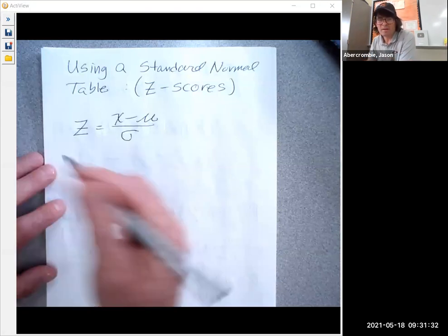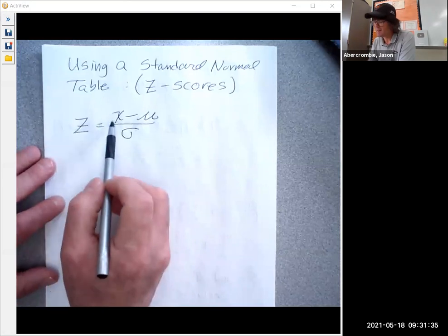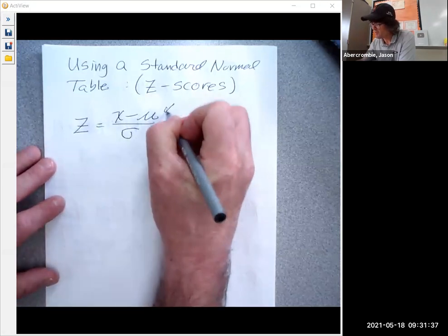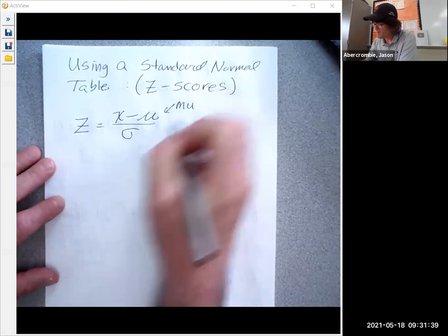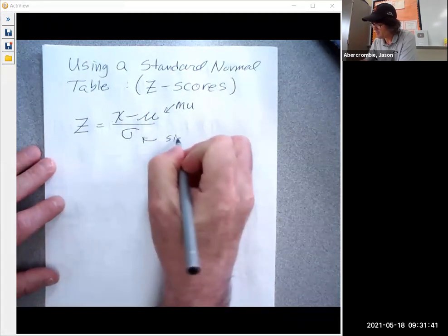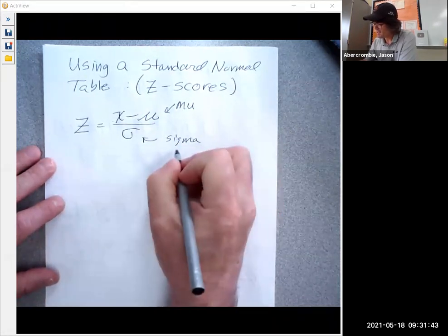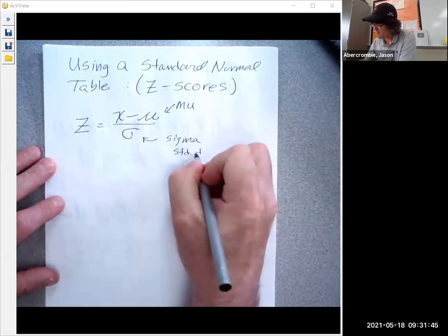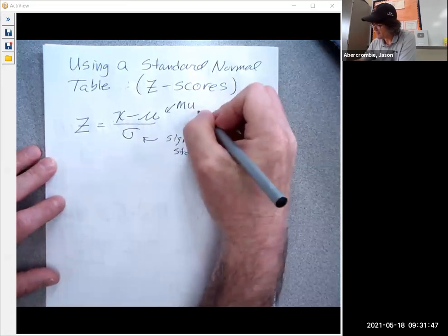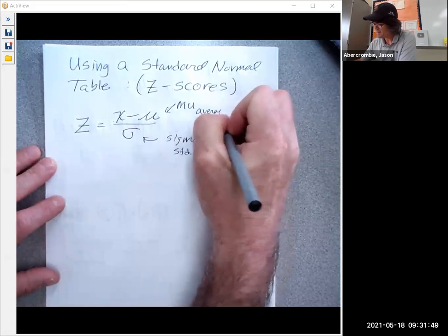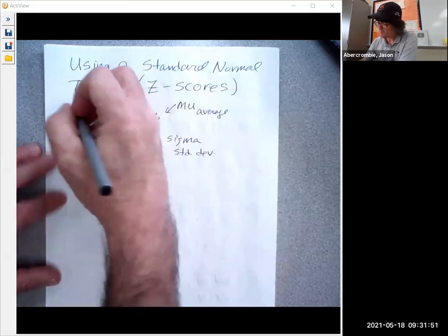So I've written down a formula: Z equals X minus μ (this is called mu), and this is called σ (sigma). So this is the standard deviation, and this is the average or mean, and then X is your value.